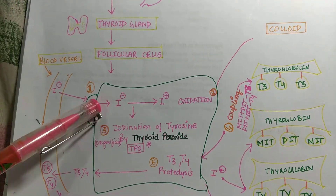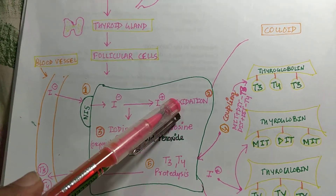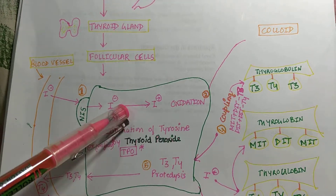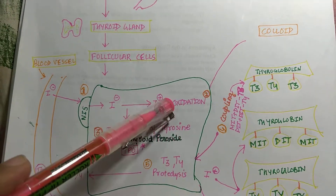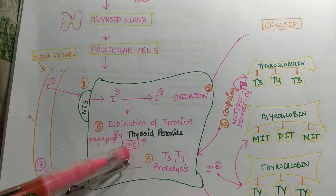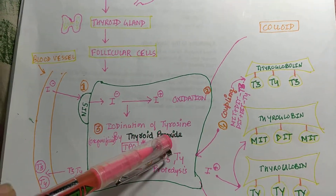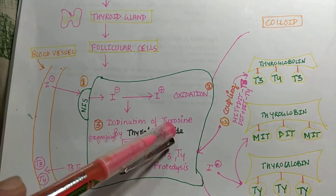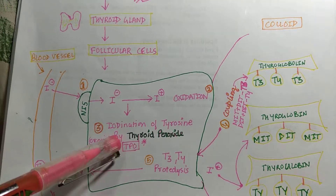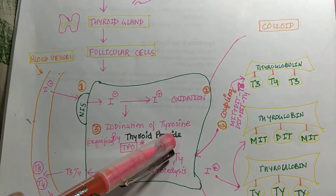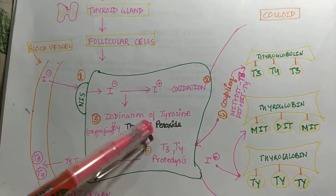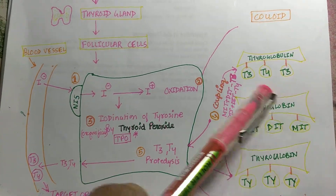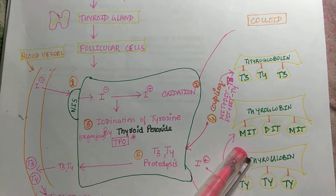After coming into the cell, the second step is oxidation of the iodine, which is carried out by thyroid peroxidase. The third step is iodination of the tyrosine, also carried out by thyroid peroxidase, and this is where thyroglobulin plays its role.